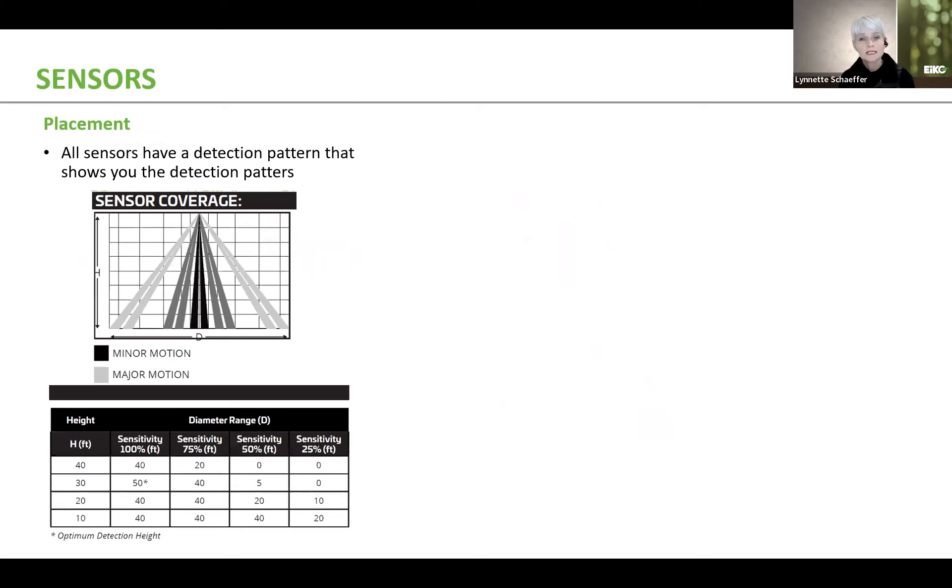Now, when it comes to sensors, something very important to consider is not only the technology, meaning do you need PIR, do you need microwave, but also the placement. This is probably almost one of the most important things outside the PIR and microwave. For this reason, all sensors have a detection pattern, which shows the coverage of the sensor based on the various sensitivity levels. If in fact you can set the sensitivity, you may actually find a sensor that does not give you the ability to set the sensitivity. In that case, it will still give you a detection pattern. It's usually always on every single spec sheet for any type of sensor.